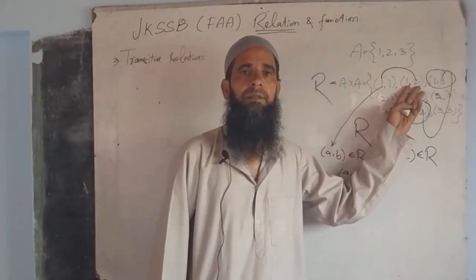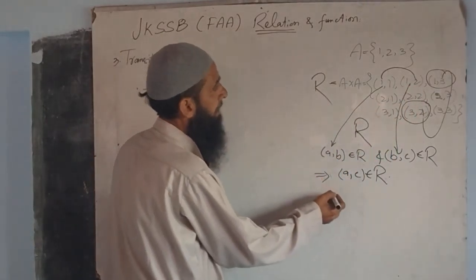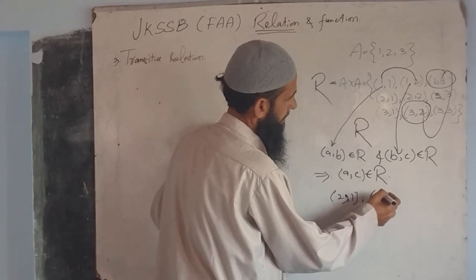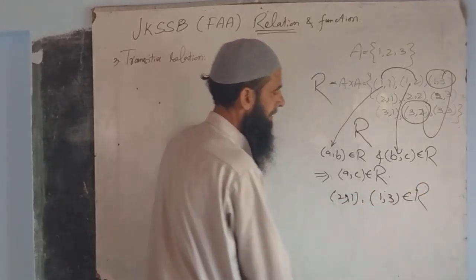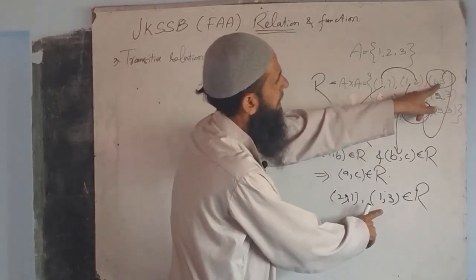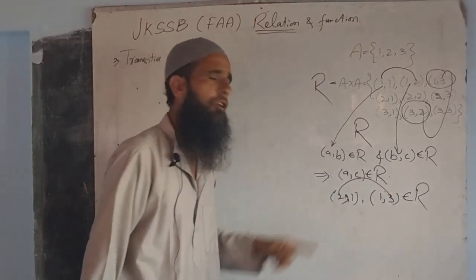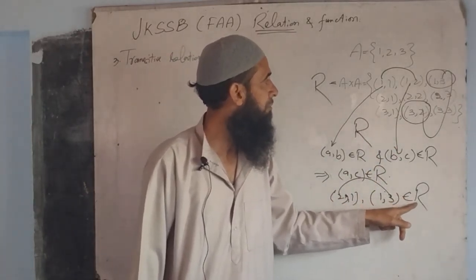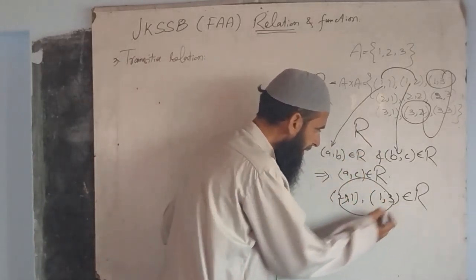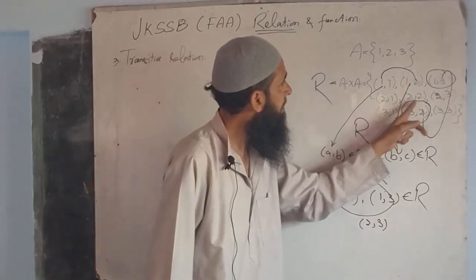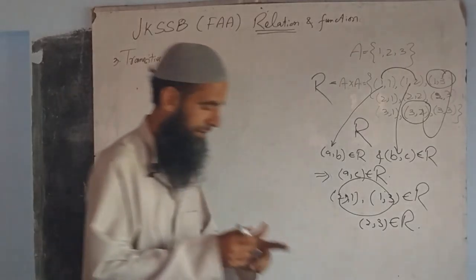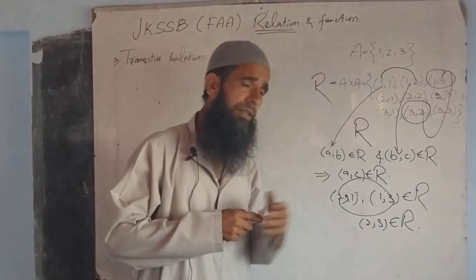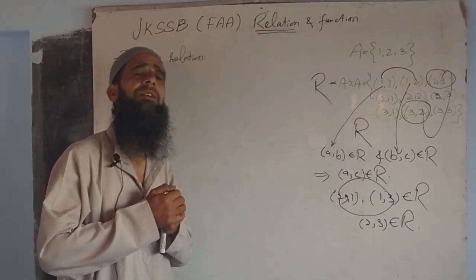We have (2,1) here and (1,3) here. If we get that (2,3) also belongs to the same relation, then we see it becomes a transitive relation. Clearly, (2,1) and (1,3) belong to R, and (2,3) also belongs to R. Therefore this relation is a transitive relation.